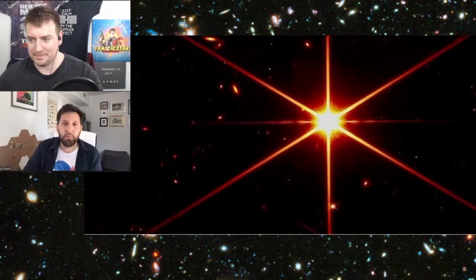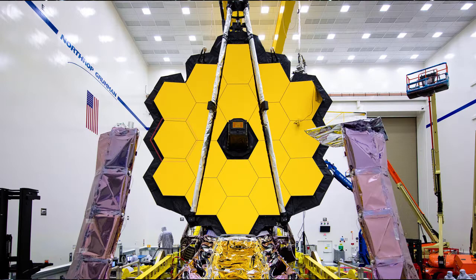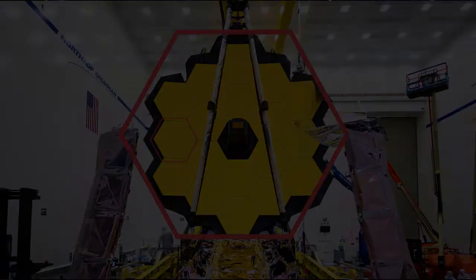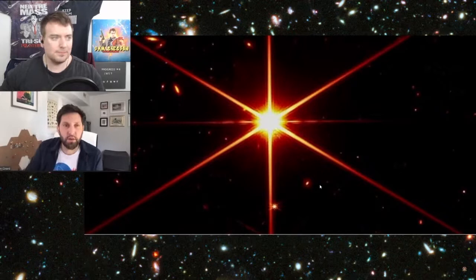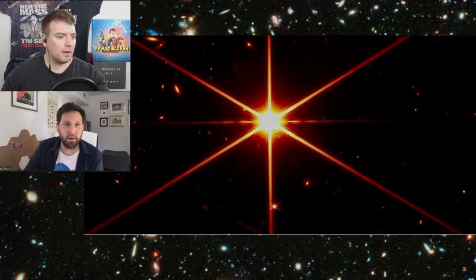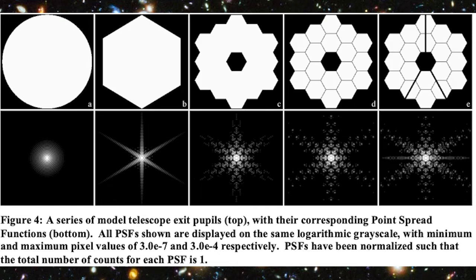The six main spikes are due to basically the hexagonal shape of each segment and the overall hexagonal shape. Do you have the image I posted on Twitter where you see the different pupil sizes? This is from a report made in 2007 by some Space Telescope Science Institute colleagues. You see the leftmost image is just a plain circular pupil on the left and what you get as an image.